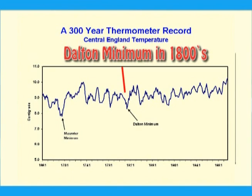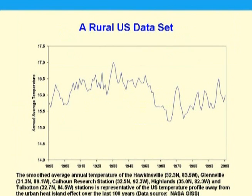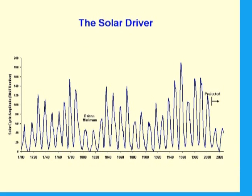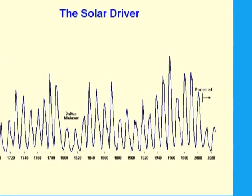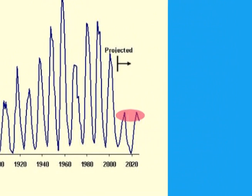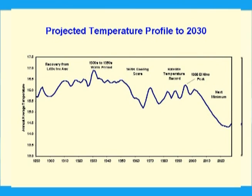The experience of the Dalton minimum was that winters were longer and harder, and this effect is with us now. Combining the rural US data set we saw earlier and the projected temperature decline response to weak solar cycles 24 and 25, this graph shows the expected decline to 2030. The temperature decline will be as steep as that of the 1970s cooling scare, but will go on for longer.